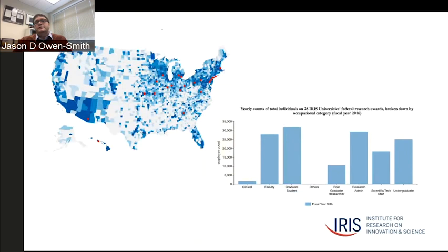This takes us back to the IRIS data and asks how we can begin to measure this. Because we can track at a very fine-grained level what's being purchased to support research, we can really dig into where the money flows—to what industries, in what geographies. What you see here is a national map at the county level of research expenditures from the universities represented as red dots, showing simply where the vendors are located. The areas right around the universities tend to be dark, but because of the nature of academic research this is actually a nationally distributed map.